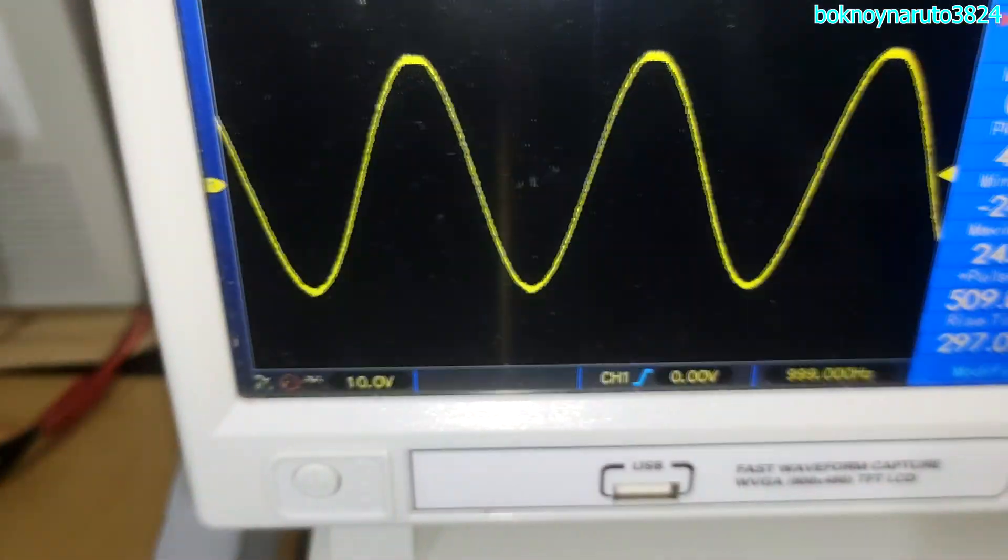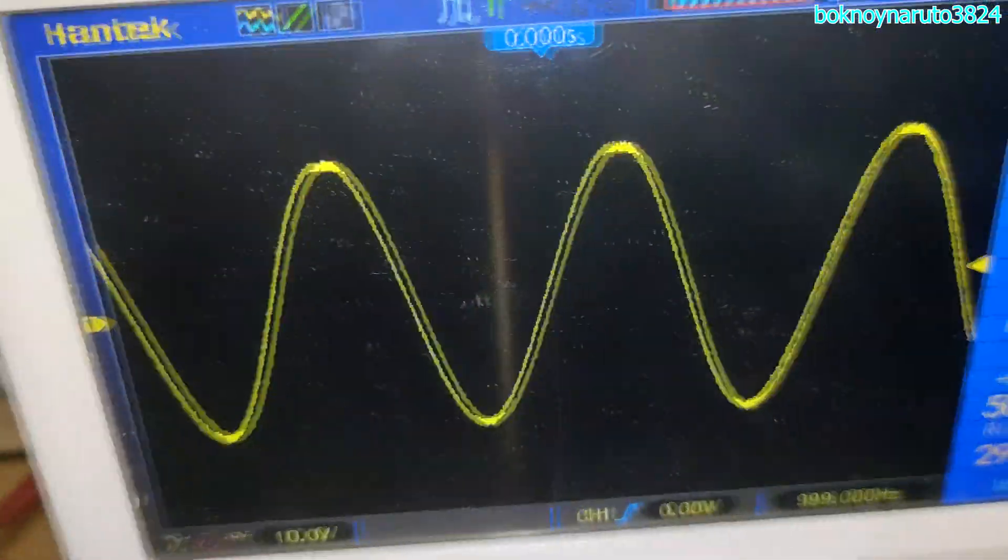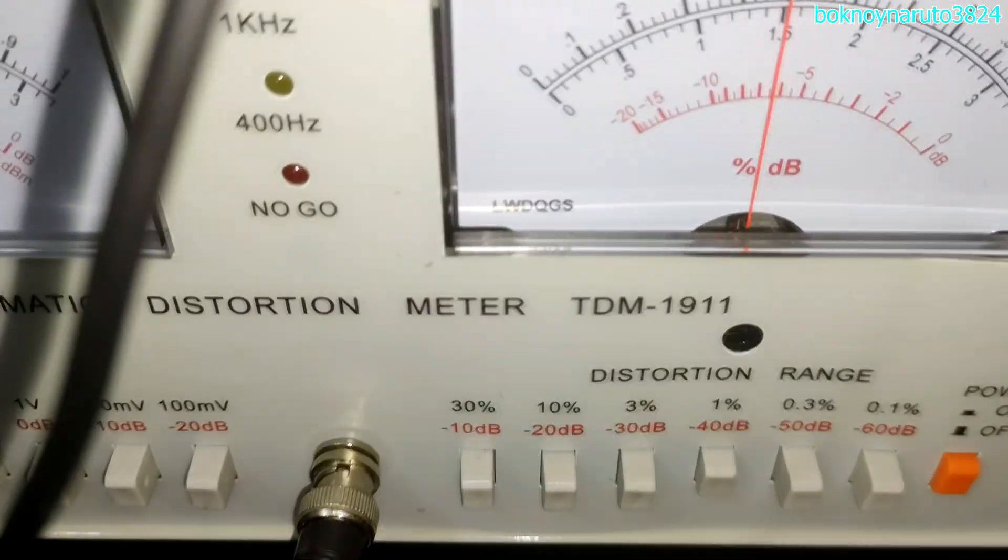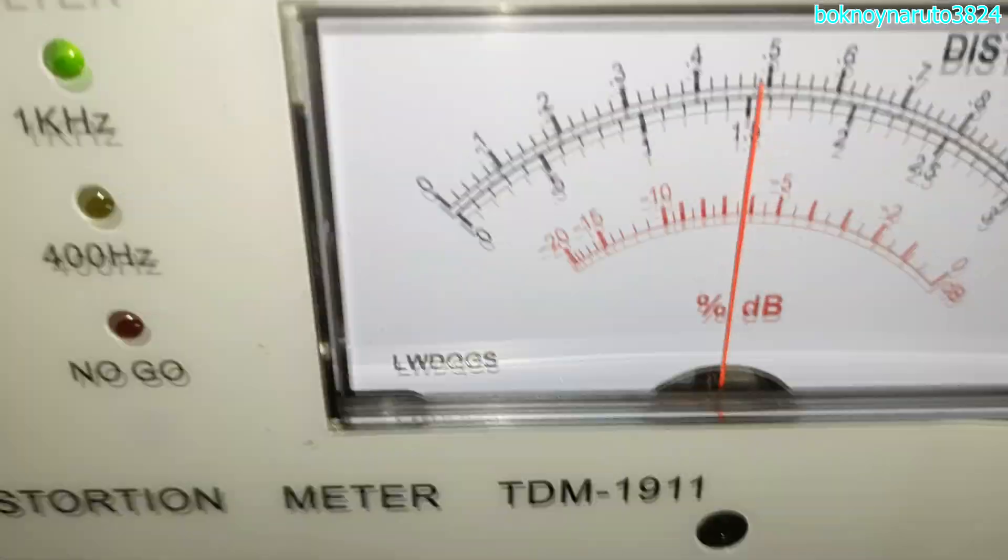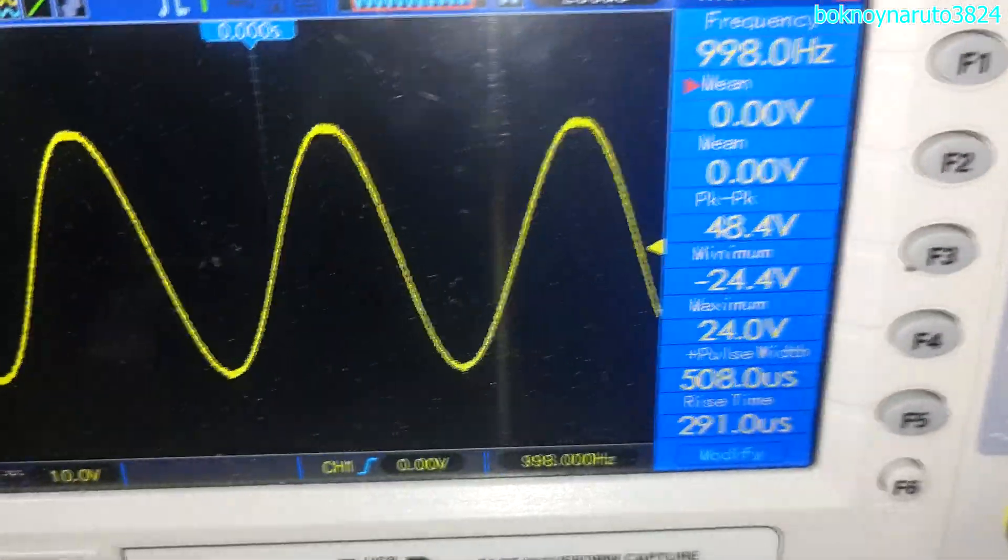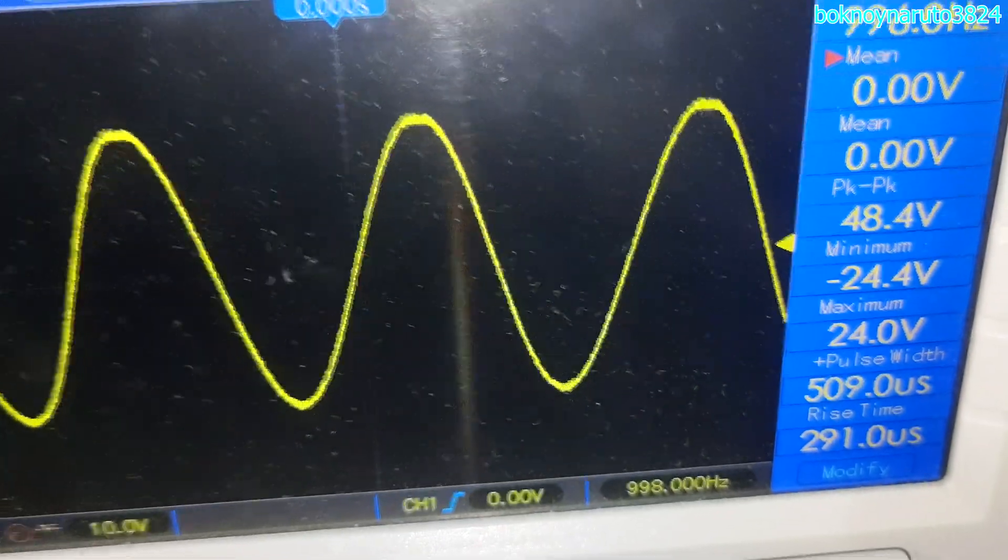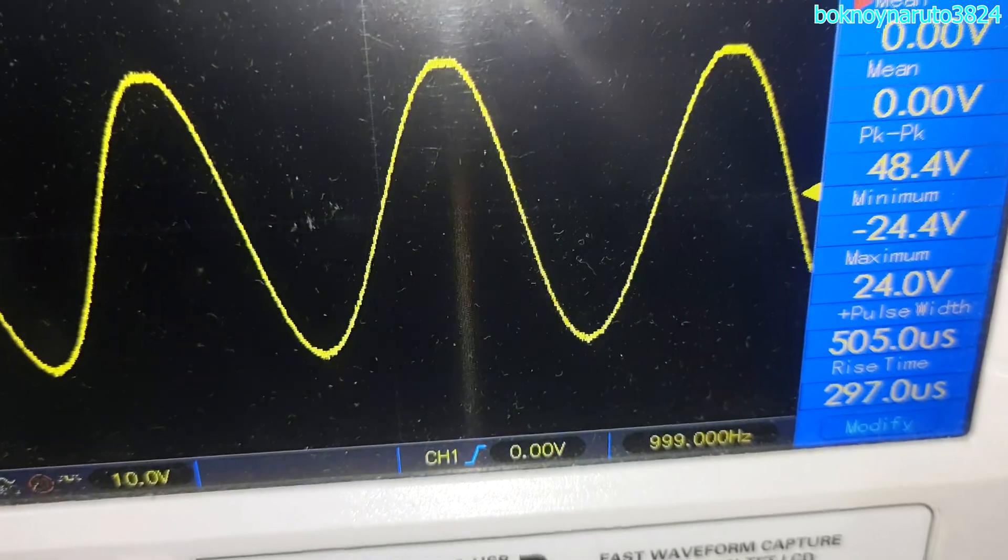So that's 48.4 volts, and it's clipping at the top. I think it's clipping a little bit. Even though it's clipping at 48.4 volts, the THD is around the 1% range, about 0.5%. So let me just reduce the input a little bit more, maybe at 48 volts peak to peak.